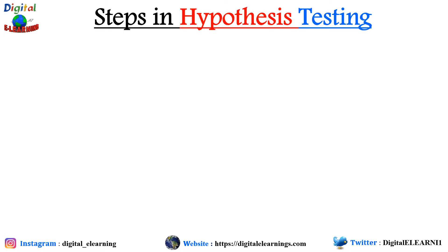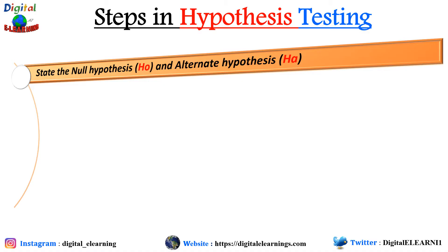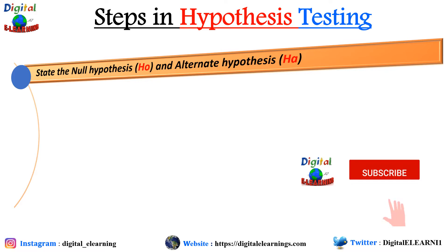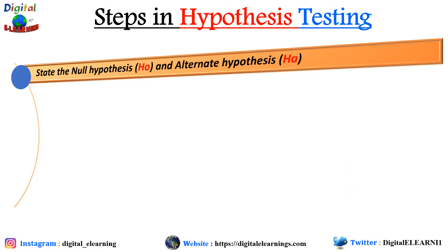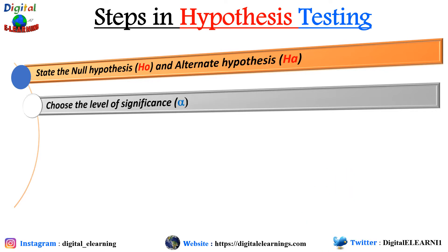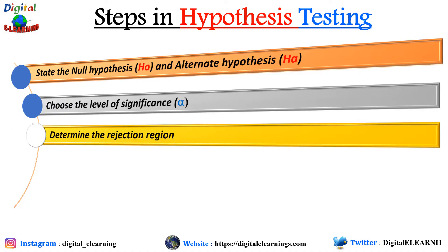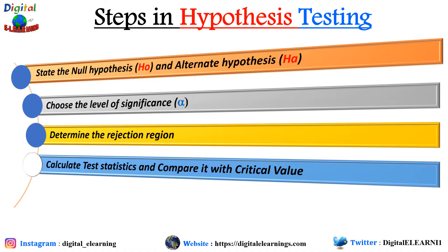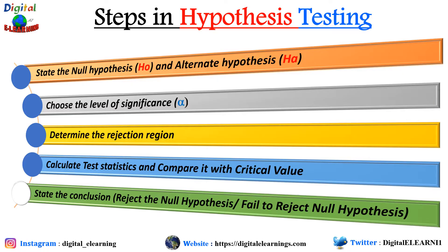Now let's look at the steps involved in hypothesis testing. Step 1: state the null hypothesis and the alternate hypothesis. Then we need to define the level of significance alpha. Then determine the rejection region. Then calculate the test statistics and compare it with the critical value. Finally, we state the conclusion — either we reject the null hypothesis, or we fail to reject the null hypothesis.